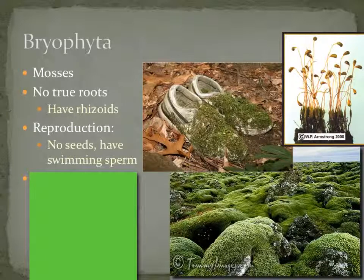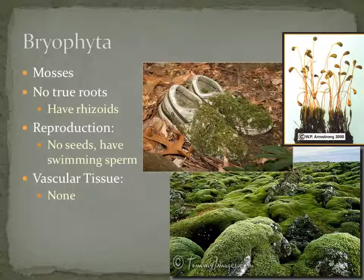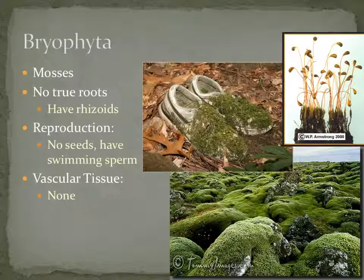Second is reproduction. They have no seeds — this is a seedless plant unit. These guys are unique in the fact that they actually do have swimming sperm, so they definitely require water for reproduction because the sperm need to swim. And finally, these plants have no vascular tissue. So having no true roots, no seeds but swimming sperm, and no vascular tissue explain why we always find moss growing in wet environments low to the ground.